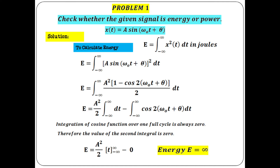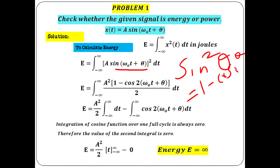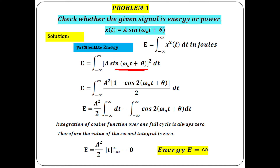Since this is a CT signal, write the formula for energy: E = integral from minus infinity to infinity of x²(t) dt. Substitute A·sin(ω₀t + θ) the whole square. A² times sin²(ω₀t + θ), where sin²θ = (1 − cos 2θ)/2. Replace sin²(ω₀t + θ) as (1 − cos 2(ω₀t + θ))/2 dt.